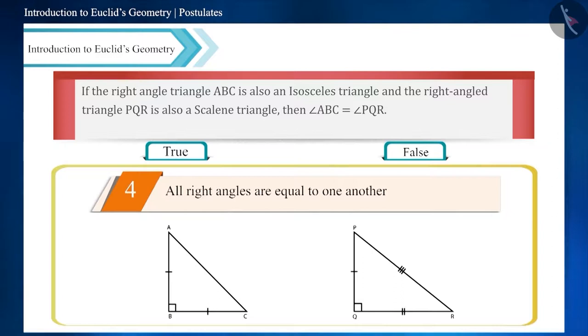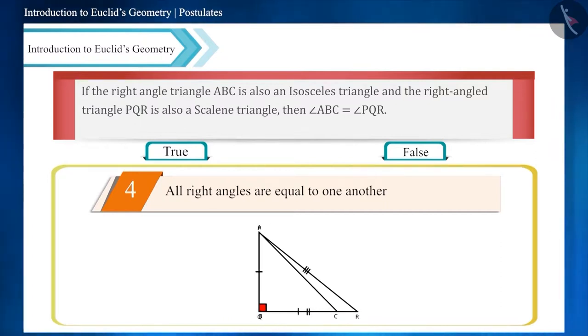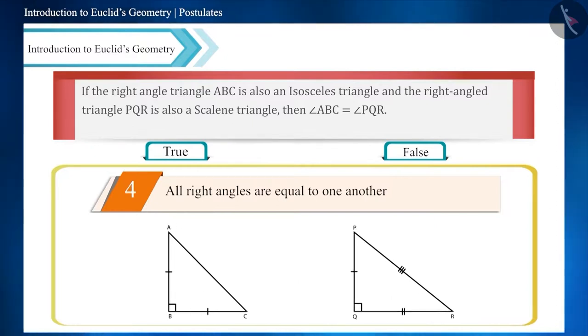If you place these two triangles one on top of each other with angle B and angle Q overlapping each other, then you can see that the angles are equal to each other even if the triangles are not congruent to each other. Therefore the given statement is true.